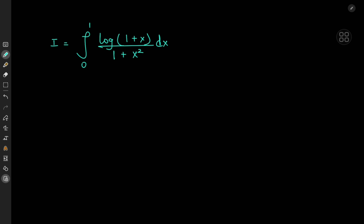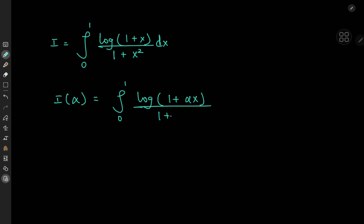There are a couple of ways to solve it using trigonometric substitutions, but I believe a Feynman's trick approach here is both very efficient and very cool. We're going to solve the integral by defining an integral function I of some parameter alpha, and we'll define it as the integral from zero to one of log(1 + αx) — placing the parameter as a coefficient of x inside the logarithm — divided by 1 + x² dx.